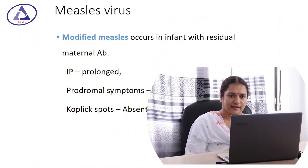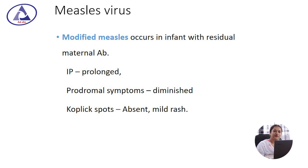In today's session I am going to discuss about the measles virus outcomes, complications, laboratory diagnosis, and some immunological features of measles virus. What is modified measles? It is a condition that occurs in infants with residual maternal antibody they carry from the mother, with placental source. Here the incubation period is prolonged, prodromal symptoms are diminished — that means fever, cough, and coryza are not appearing — Koplik's spot is absent, and only a mild rash is present.